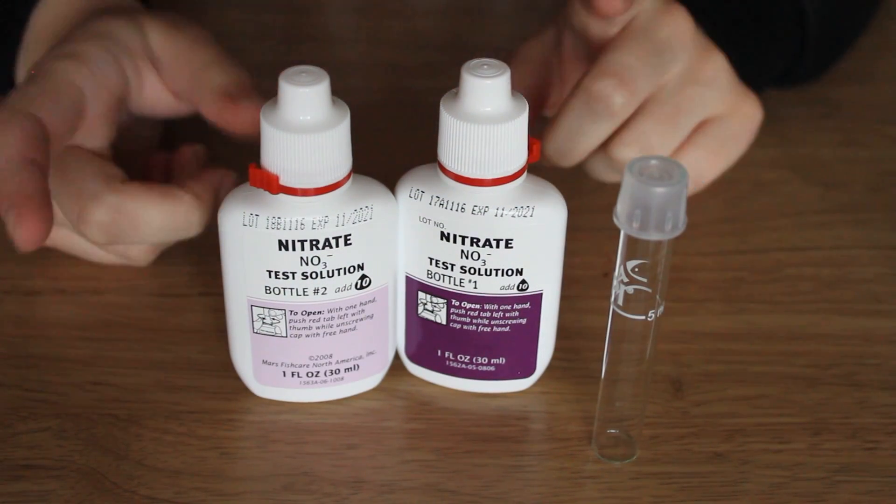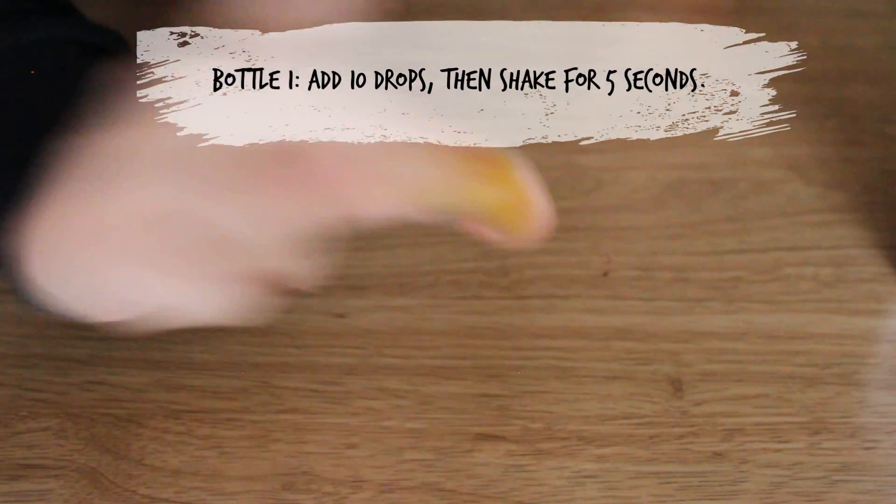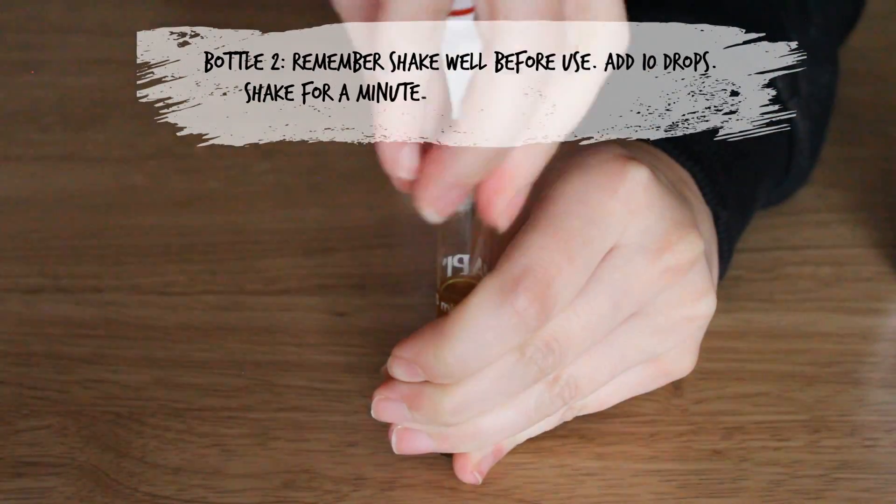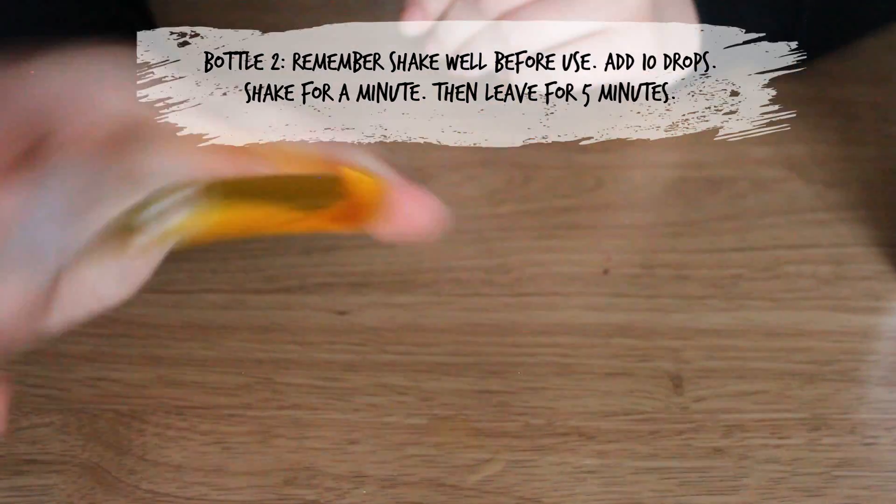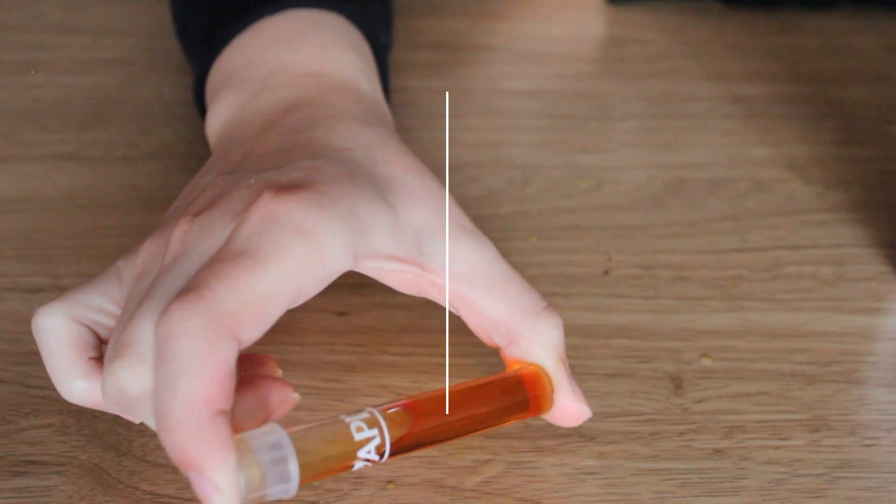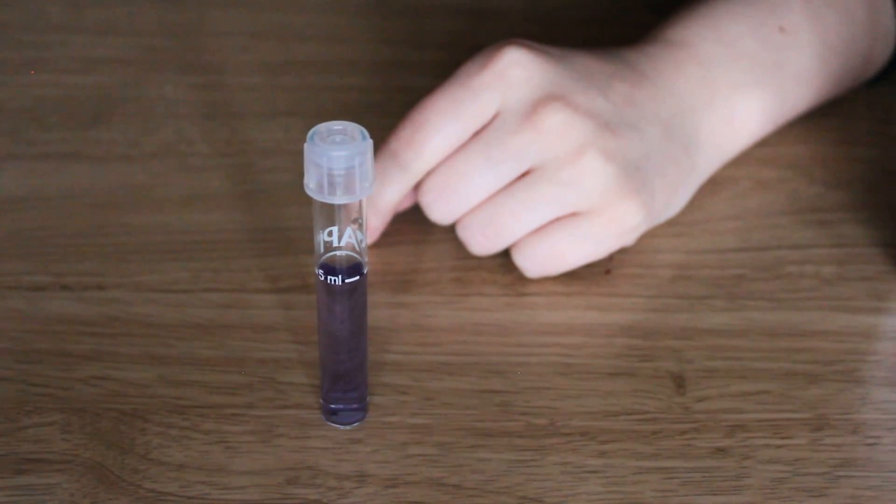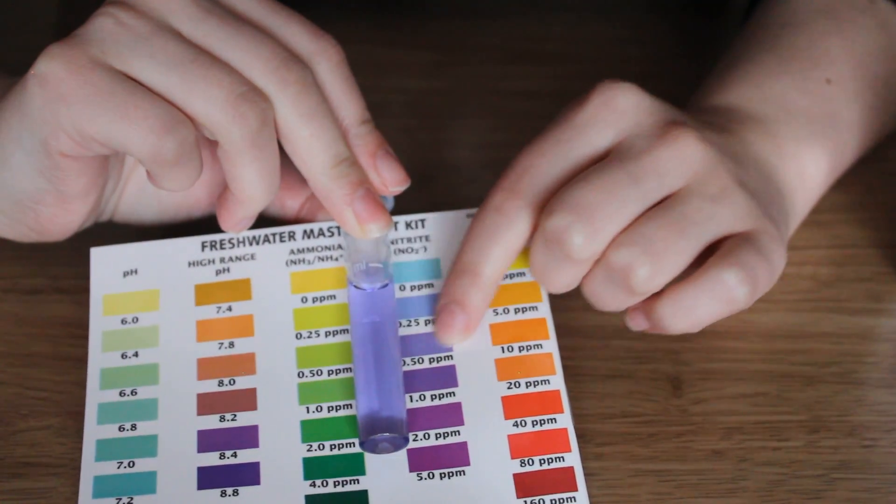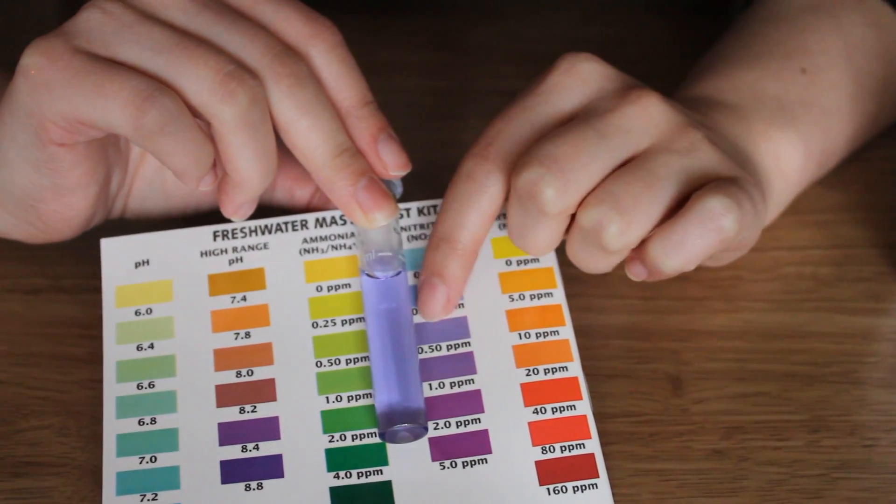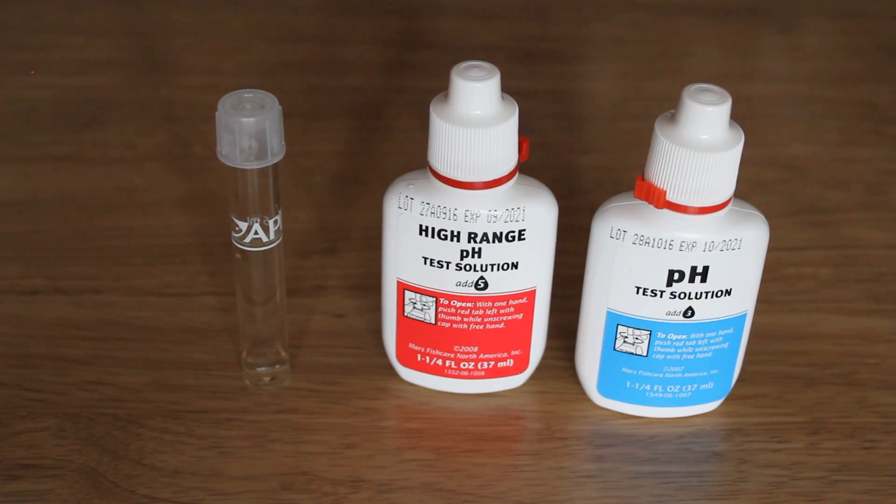Whilst we're waiting for that result we're going to do the nitrate. With the nitrate now that's done we've got to leave it for five minutes. Now we can look at the nitrite, so we'll compare it to the little thing that comes with the kit. I would say it's around here, I think it's maybe 0.50, so not ideal but it certainly could be worse.